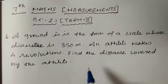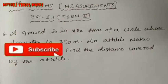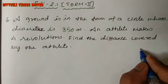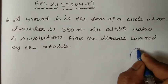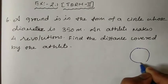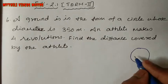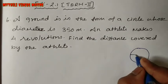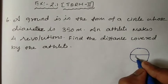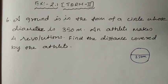So here, the athlete is running around a ground. The ground's diameter is 350 metres. The ground is in the shape of a circle. The shape given here is a circle and its diameter — diameter is half of a circle — so the diameter is 350 metres.